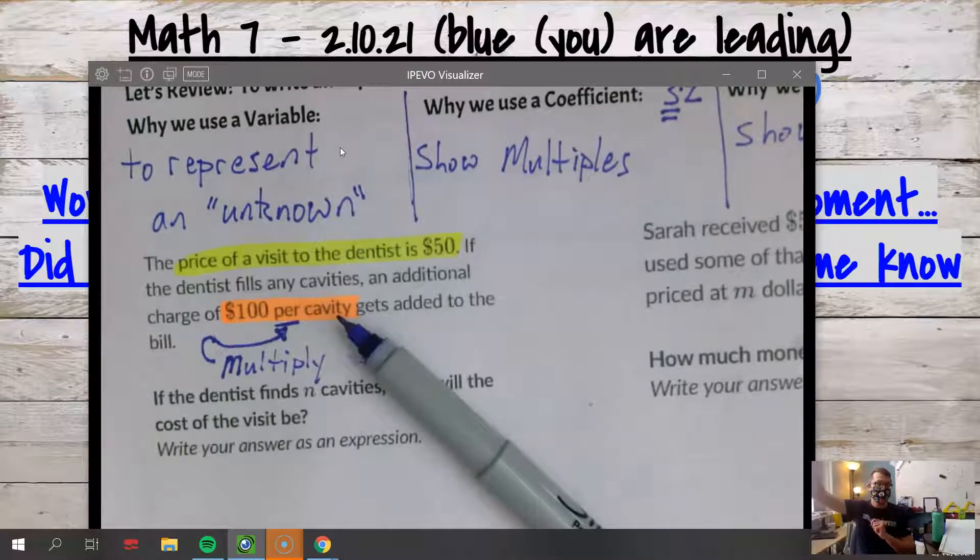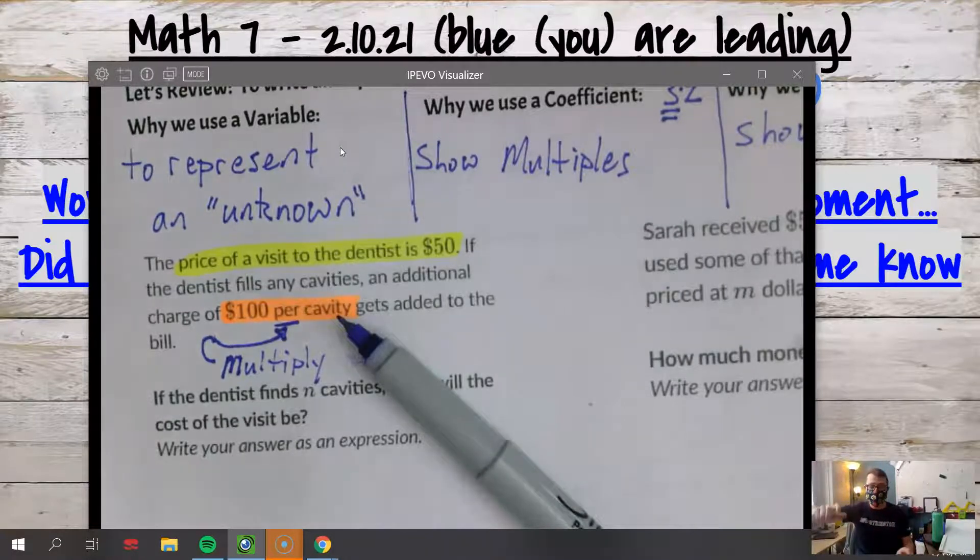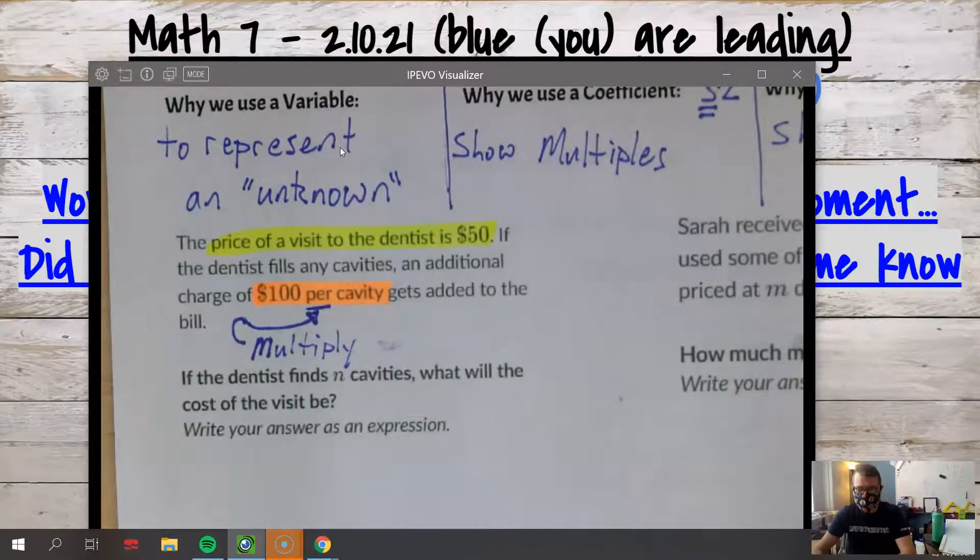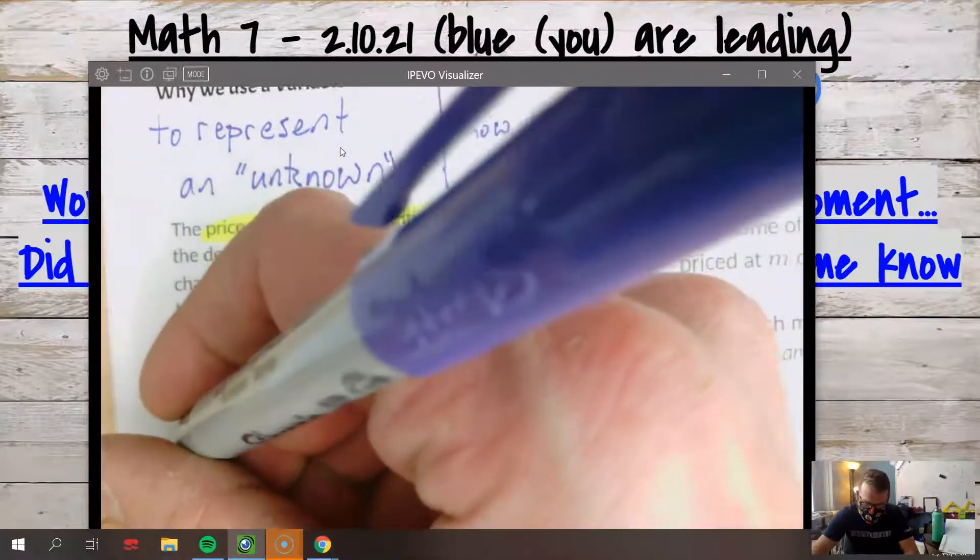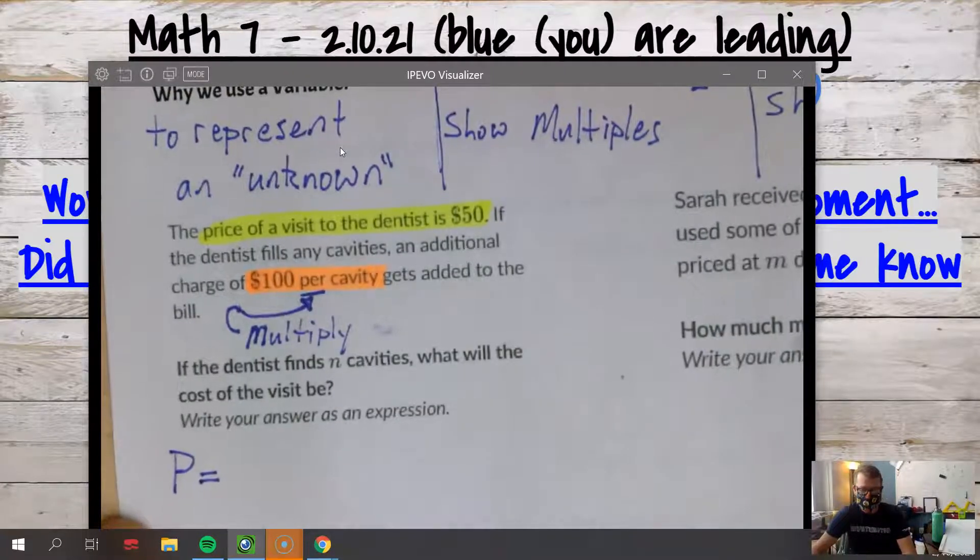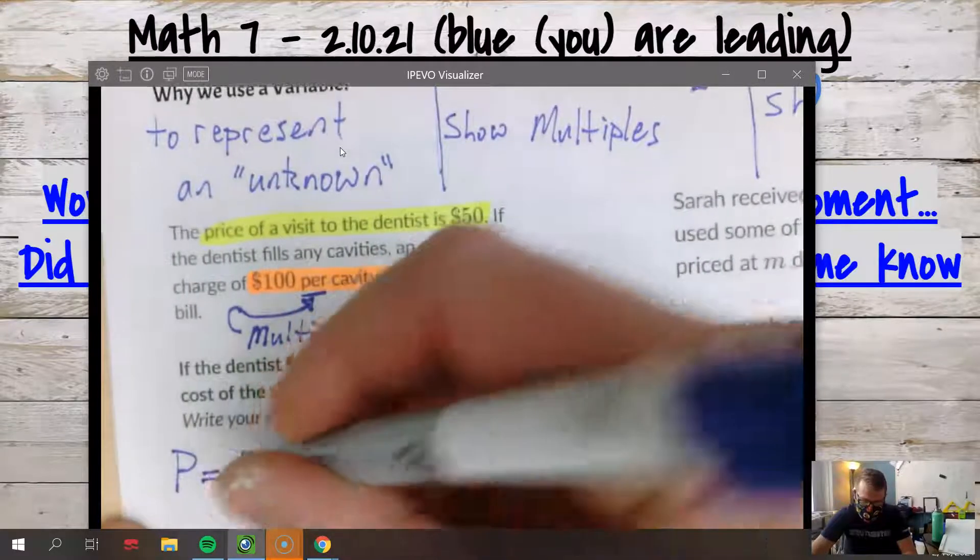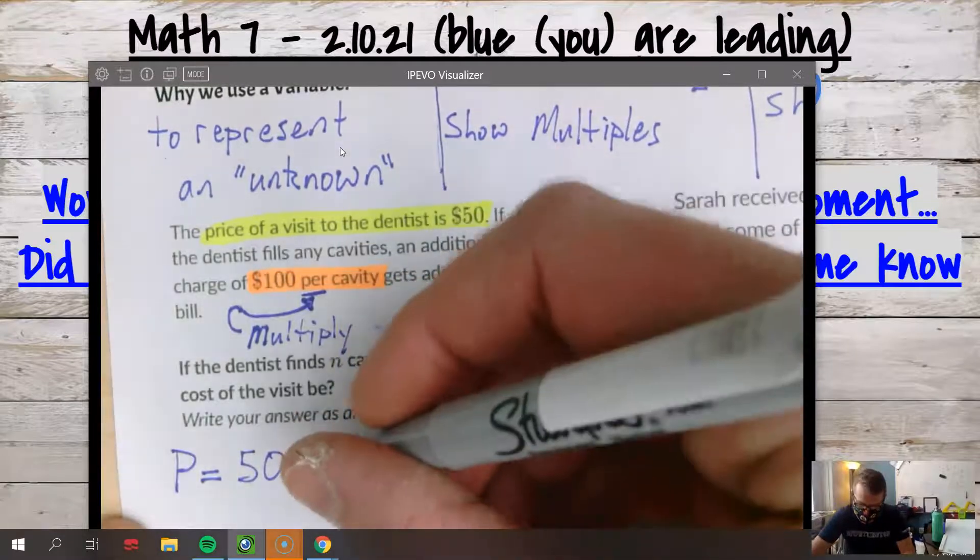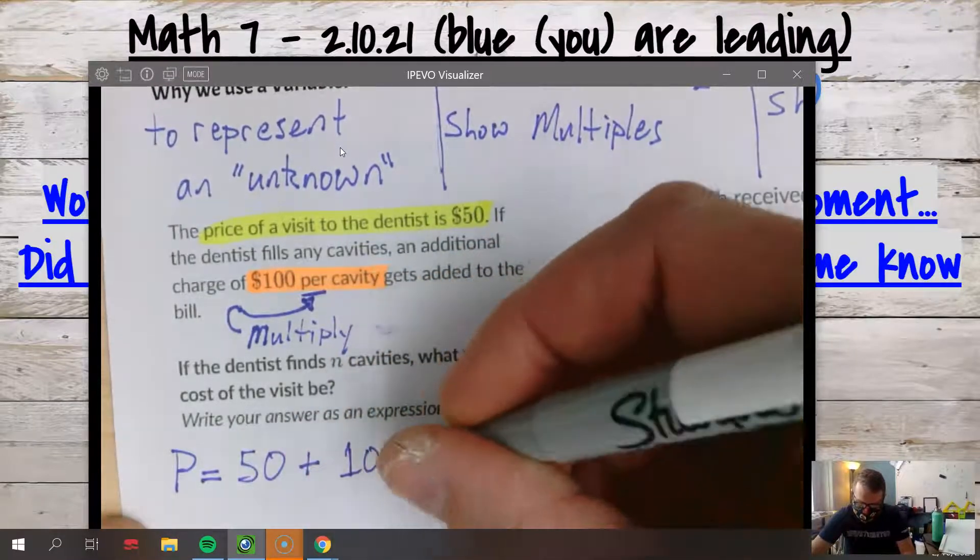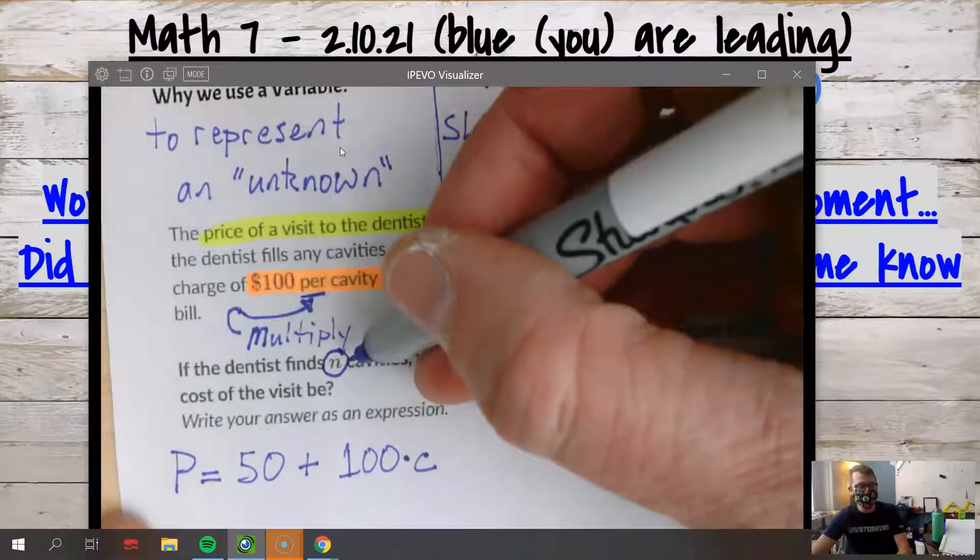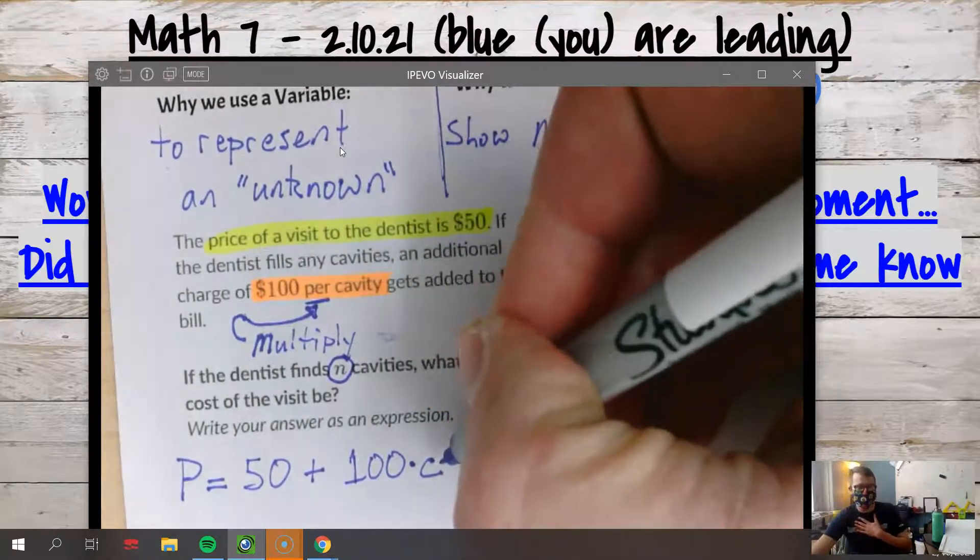They're not asking you to solve the dollars per cavity. They're telling you the dollars per cavity. So when they're telling you the answer to the division, we no longer have to divide because notice we don't have a number of cavities - this is just one cavity. So this is actually telling us to multiply. Who's ever had a cavity? I've had a root canal, which is like a cavity but even worse.